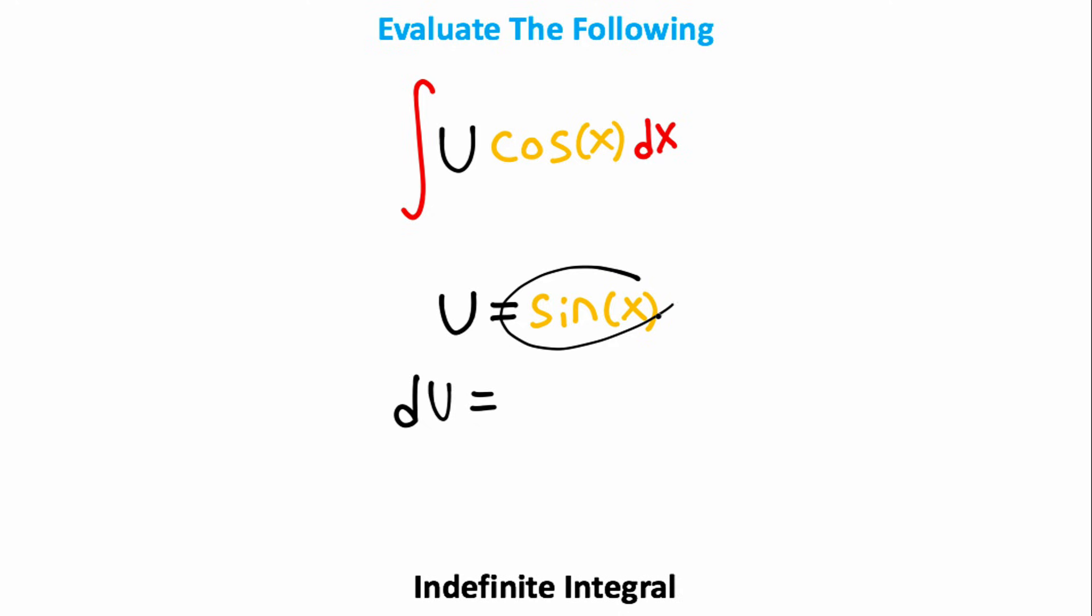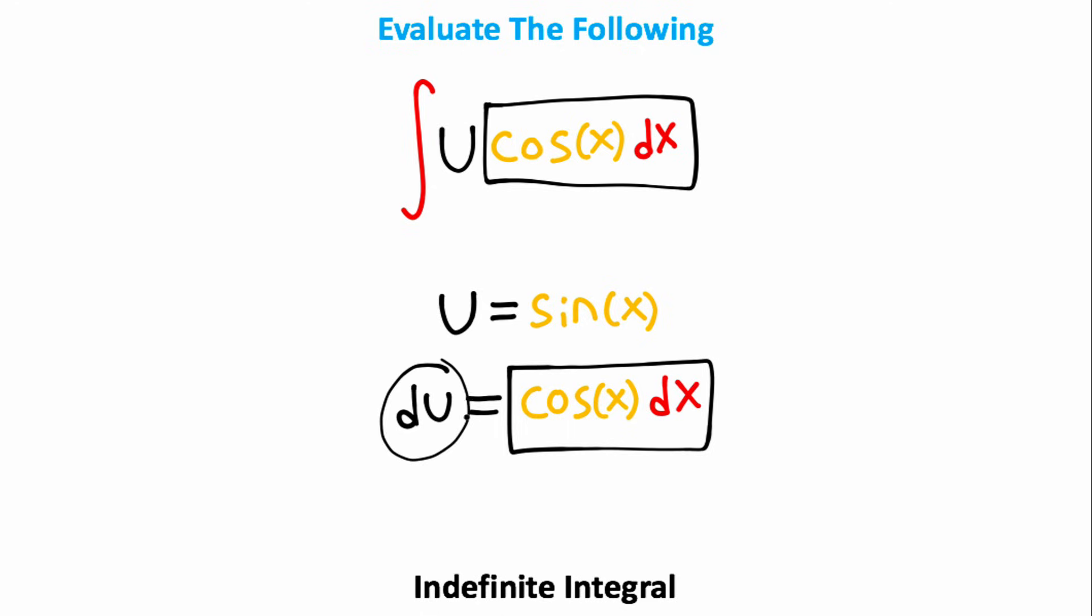So what I'm going to do is take the derivative of this sine term, which is cosine, and since I took the derivative of the sine of x, I'm going to show that this derivative was taken with respect to x. Notice after taking this derivative, I can now replace the cosine x dx in this integral with du. So all I need to do is integrate u with respect to u, and I can do this pretty simply using the integral power rule.